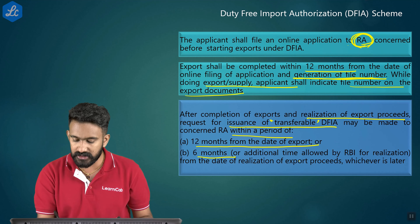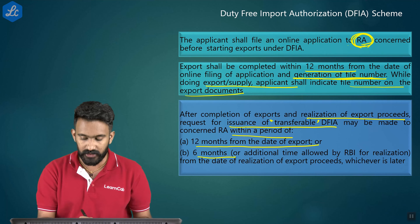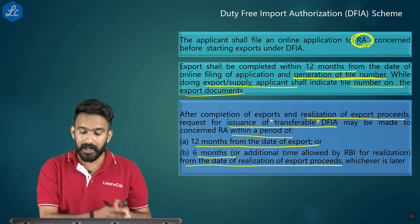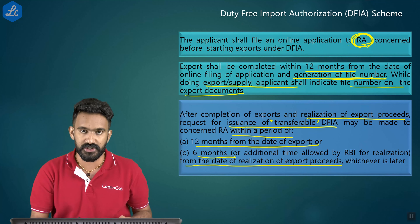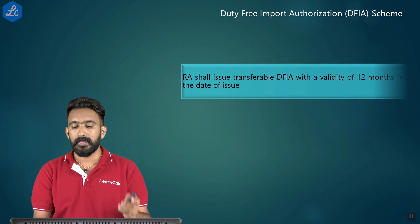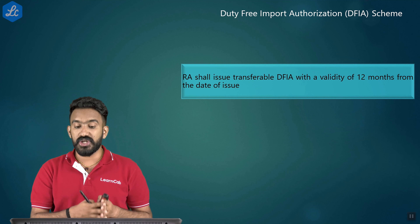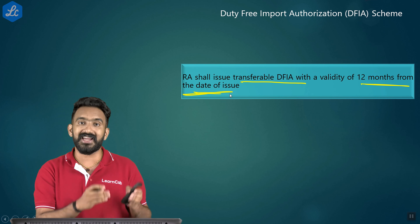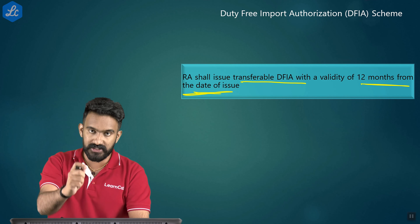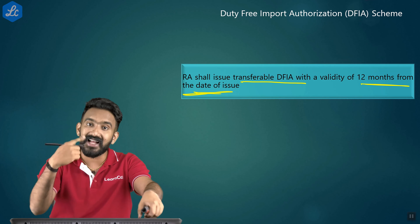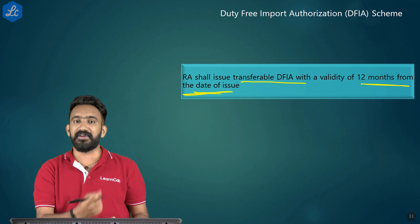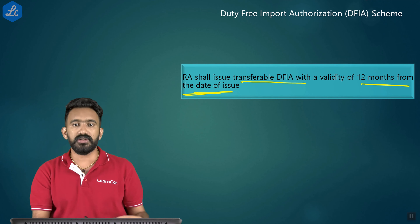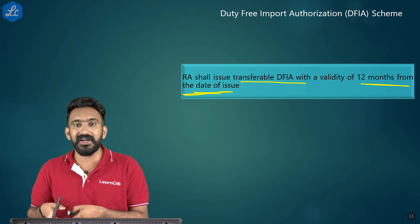The DFIA will be given within 12 months from the date of export or 6 months from the date of realization of export proceeds (or additional time allowed by RBI), whichever is later. The regional authority shall issue a transferable DFIA with a validity of 12 months from the date of issue. This means you can give this authorization to another person, who is then eligible to do duty free import — a significant advantage. If you want a transferable authorization, you must go for DFIA, not Advanced Authorization.